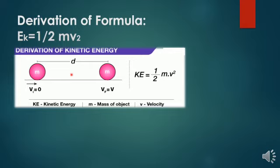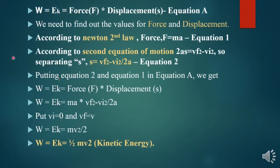When the body sets into motion it possesses kinetic energy. When the body stops, its final velocity is vf = v. From previous topics, work is equal to force multiplied by displacement: W = F × s. Let us call this equation A.